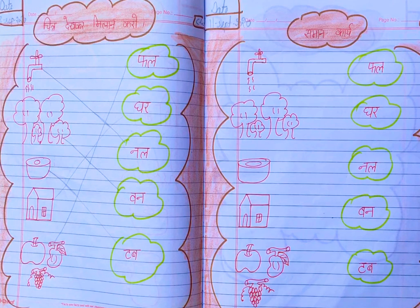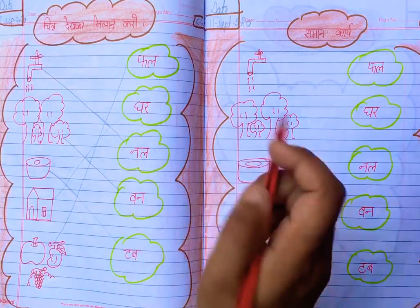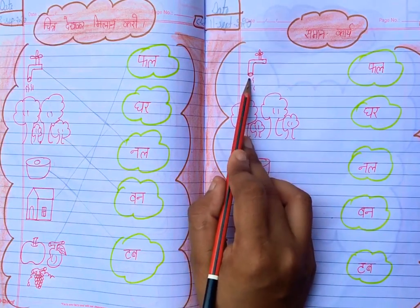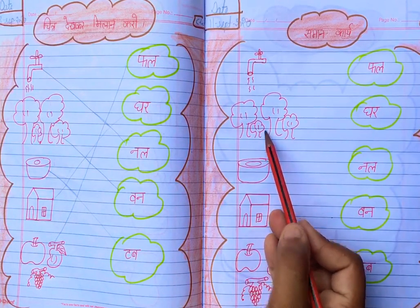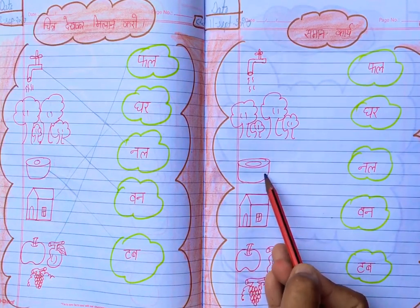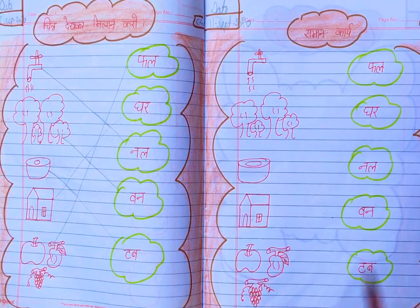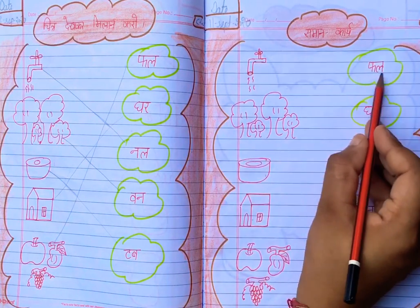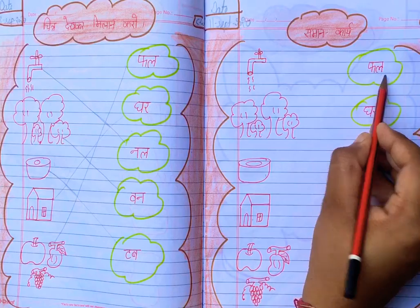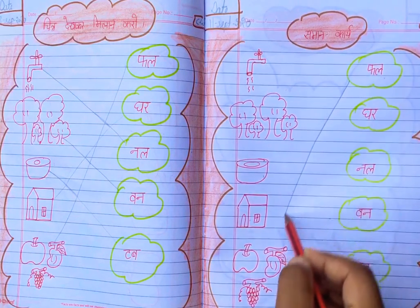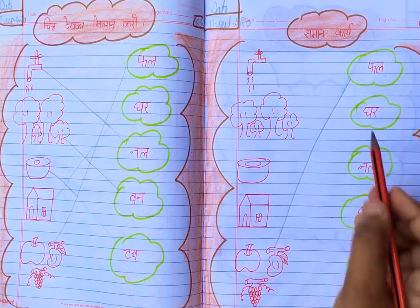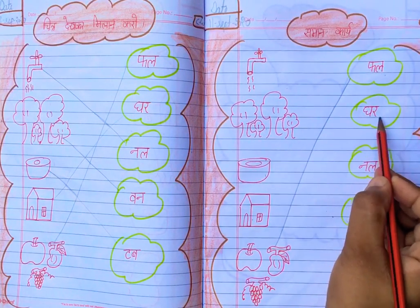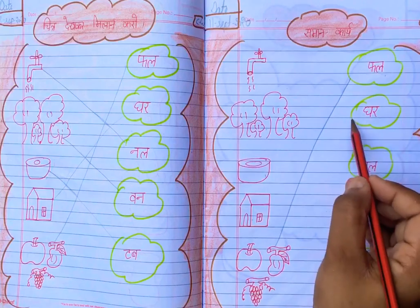तो आपको picture देखकर शब्द से मिलान करना है। जैसे कि नल, वन, तब, घर, फल — so नल, फल, where is फल? Match the फल. Match the घर.